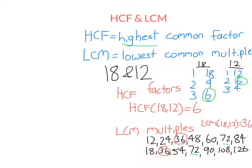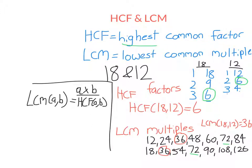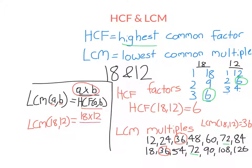Most people find lowest common multiple harder than highest common factor, so here's an easier way to find it if you're good at finding the HCF. The rule is: the lowest common multiple of two numbers A and B equals their product divided by their highest common factor. In our example, the two numbers were 18 and 12, so the lowest common multiple equals 18 times 12, which is 216, divided by the highest common factor of 6, giving 36 — exactly the same answer. So that's how we can use the highest common factor to find the lowest common multiple.